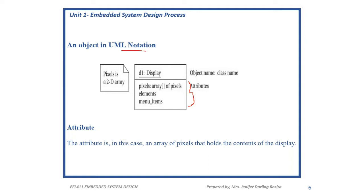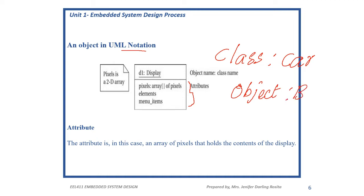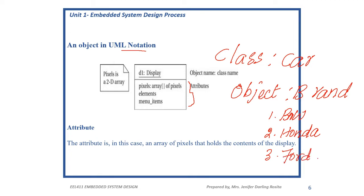What is the difference between class and object? For example, if you give a class name as 'car', the objects can be the brand names — object 1 may be BMW, object 2 may be Honda, object 3 may be Ford. So if the class name is 'car', the objects define the brands of the car.